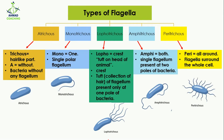The last type is peritrichus. 'Trichus' means hair-like structure and 'peri' means all around, meaning that the flagella are present all around the surface of the bacterium. As you can see, the flagella are distributed all around the surface of that particular bacteria, which is why it is known as peritrichus. That was all about the types of flagella — if you have any questions you can ask in the comment section.